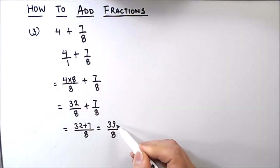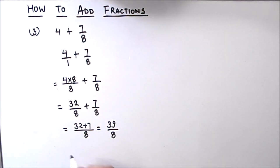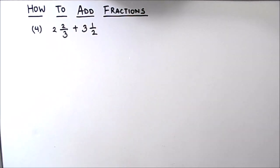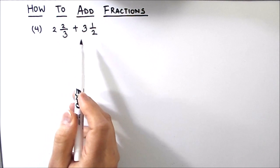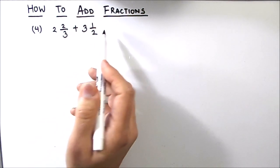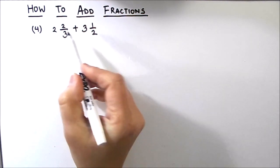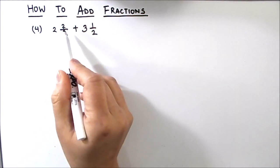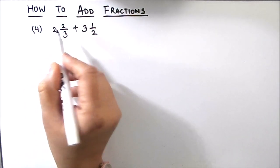The numerator 39 is odd and the denominator 8 is even, so we cannot reduce this fraction further. Our final answer is 39 by 8. Now let's move to our next example, which involves adding two mixed fractions. The addition of mixed fractions follows the same process as improper fractions, with one extra first step: converting the mixed fractions into improper fractions.